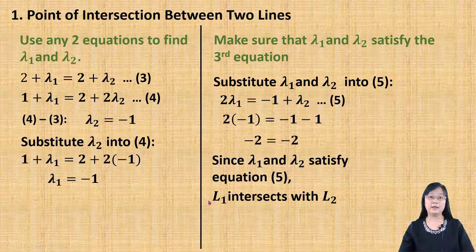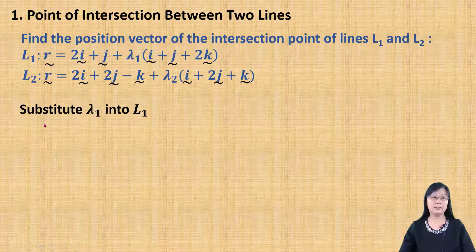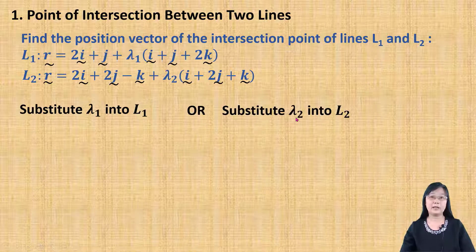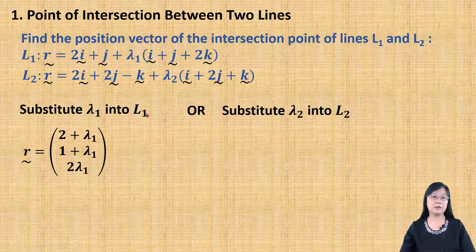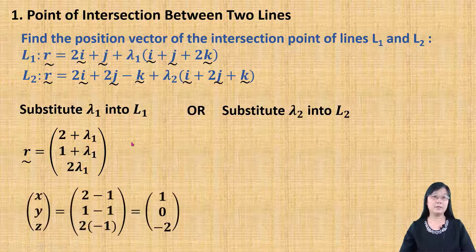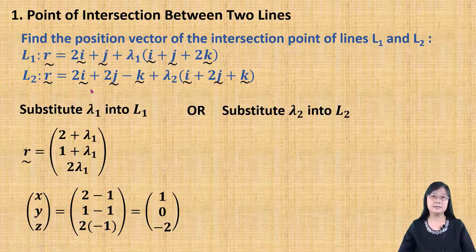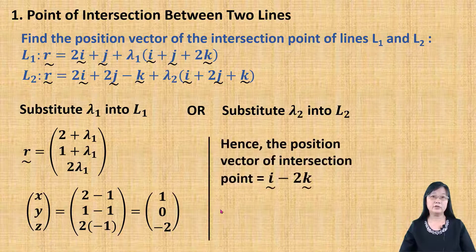Now, if we find that line L1 intersects line L2, the next step is we are going to find the intersection point. We can use λ1 and substitute into line L1, or we can substitute into line L2 with λ2. So, I use λ1 and substitute into line L1. When I substitute λ1 into line L1, I find that the position vector is 1, 0, and negative 2. Then, for the final answer, since the question gives the vector in unit vector form, we need to change it back into unit vector form. That is, i minus 2k.